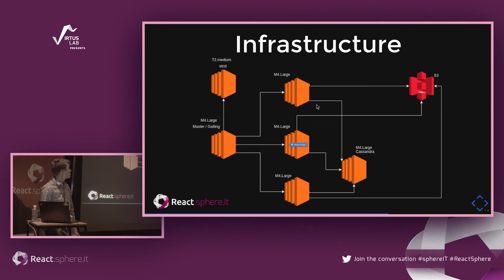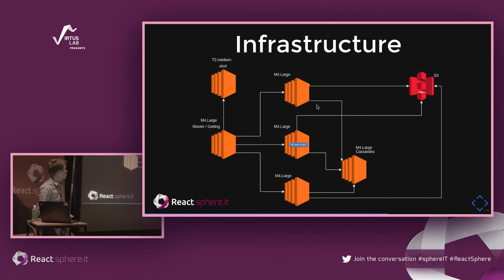For infrastructure, we deployed everything with Tectonic Kubernetes on AWS. We had three application nodes managed by Kubernetes, one Cassandra node, and Gatling running on a separate node so it wouldn't share resources and impact the evaluation results.